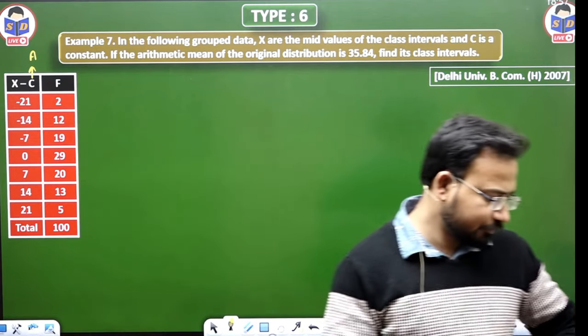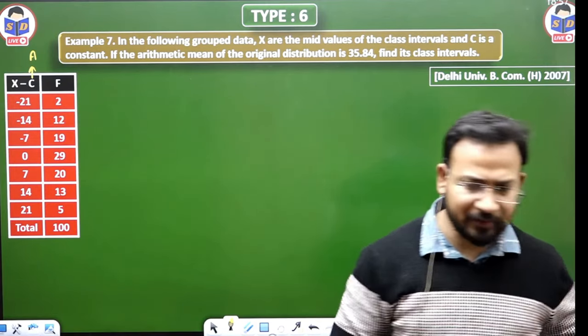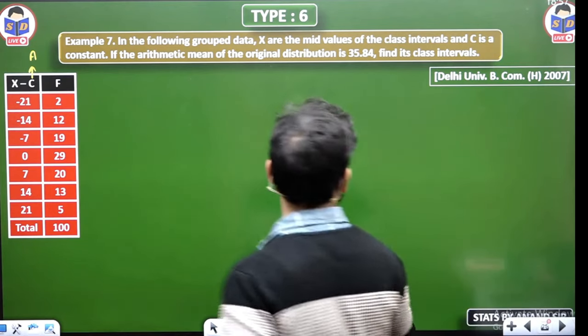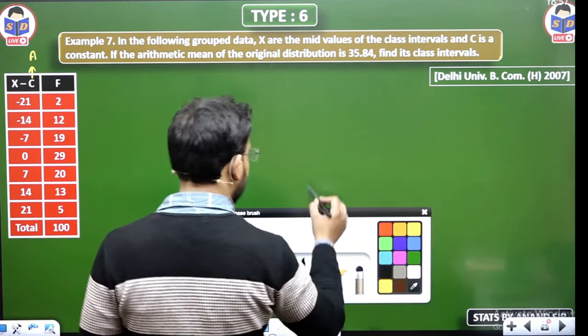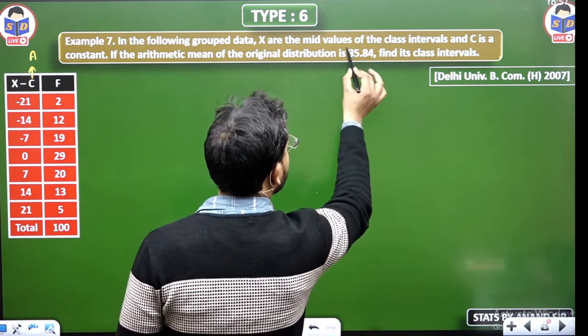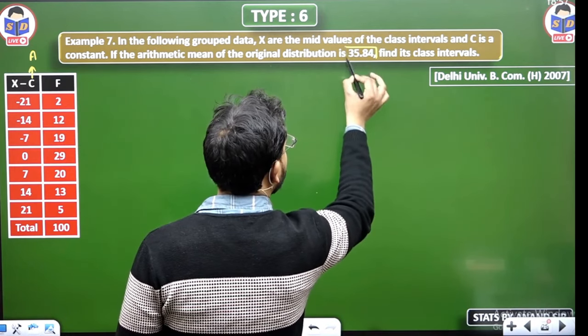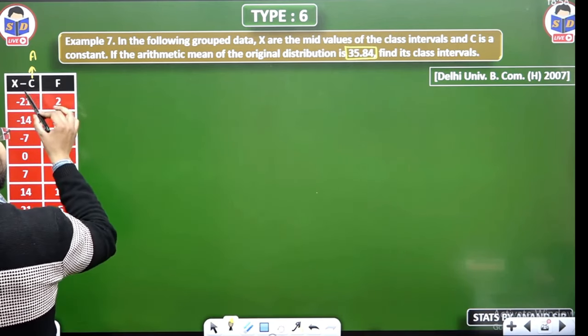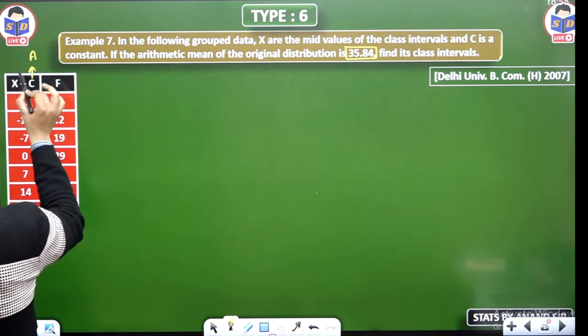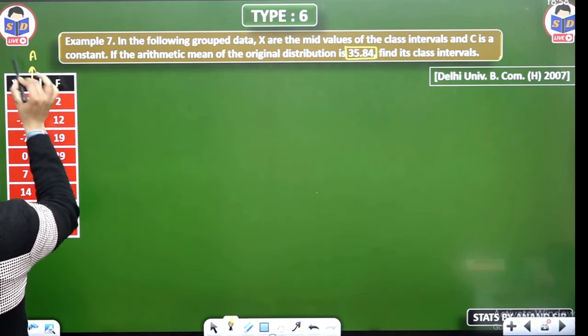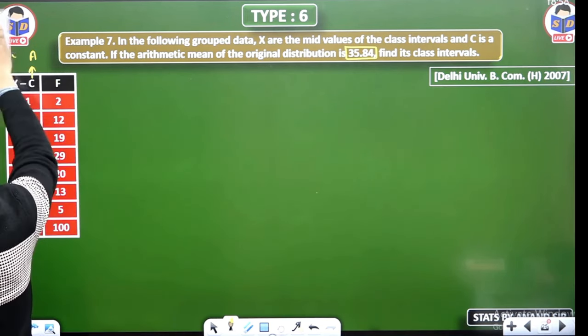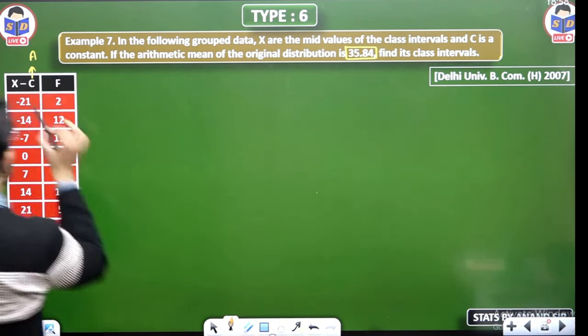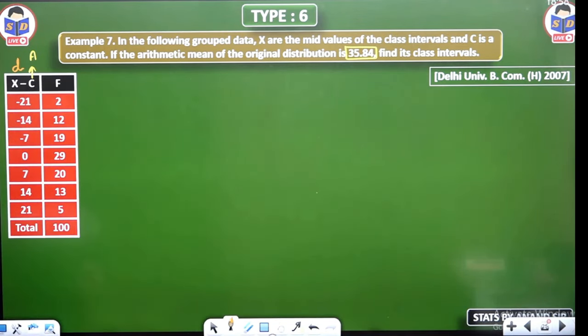So there is no point of doubt. So first of all, what do you mean? Mean is given. The original data of the original distribution mean. The mean is basically the formula. If you have A, or if you have D, you can name this whole column.